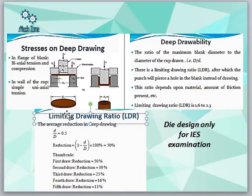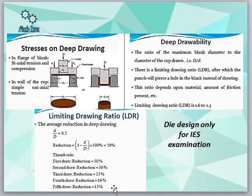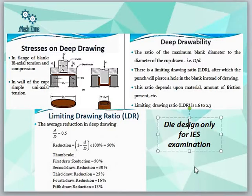For multiple draw passes, the reductions are: 50%, 30%, 25%, 16%, and 13% — so the 5th draw gives a 13% reduction. This die design topic is mainly included in the IES syllabus. It is not included in SSC JE, PSU, and GATE syllabi. However, most PSU examinations follow the GATE pattern, and assistant professor examinations also typically ask from the GATE syllabus.